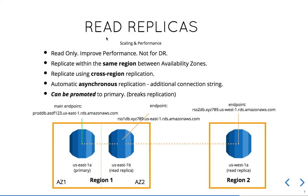The function of a read replica is to have a read-only copy of the database for an application to use for read-only operations. As opposed to multi-AZ, read replicas also support cross-region replication. You have the option to replicate between availability zones in the same region, or to replicate across a completely different region.